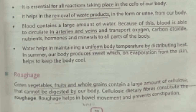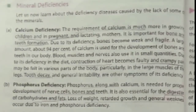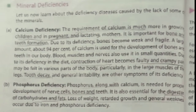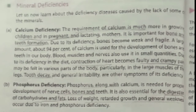Next is mineral deficiency. Minerals are very important for us, but if you don't take minerals properly in your diet, many diseases will occur. First is calcium deficiency. Calcium is very important — for pregnant ladies as well — to make bones and teeth strong. If you do not take calcium in your diet, your teeth become very weak, bones become very weak, and contraction of the heart can also take place.